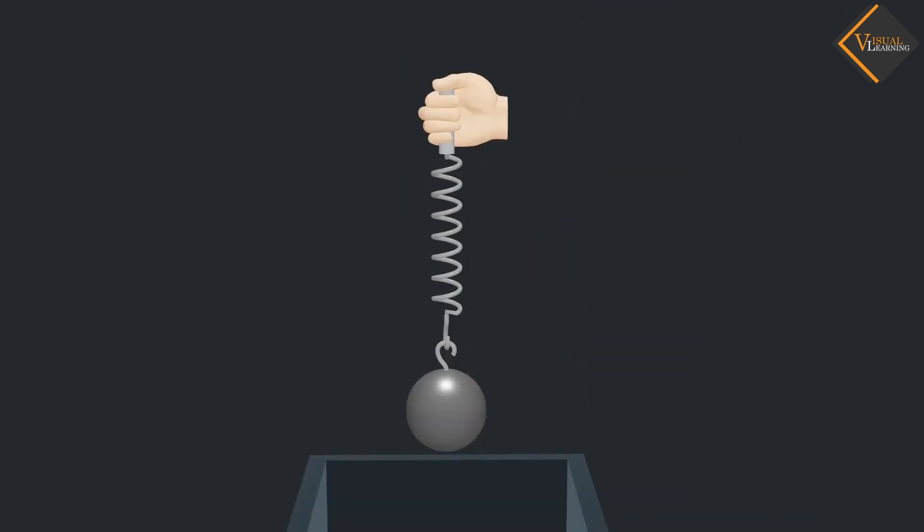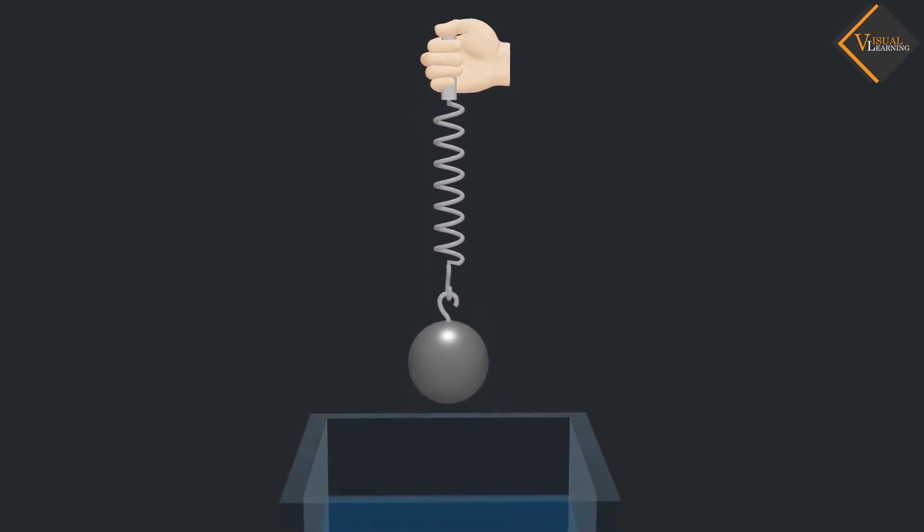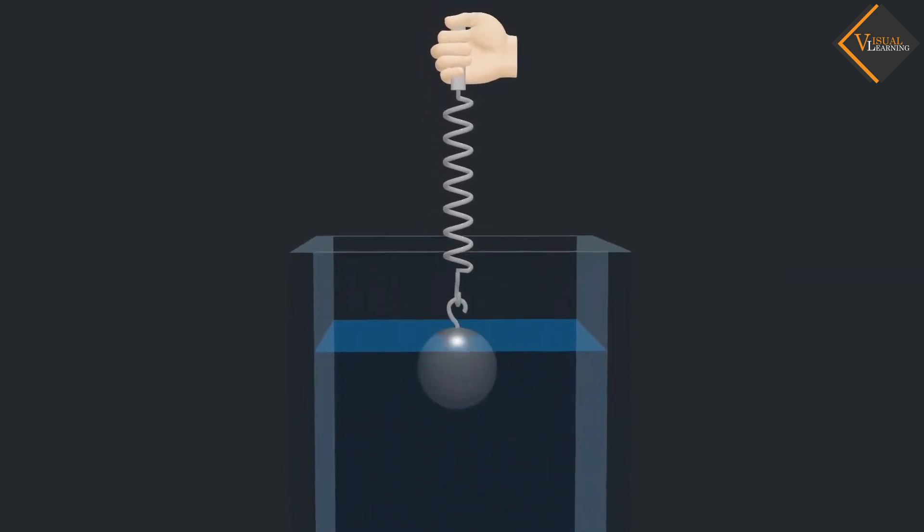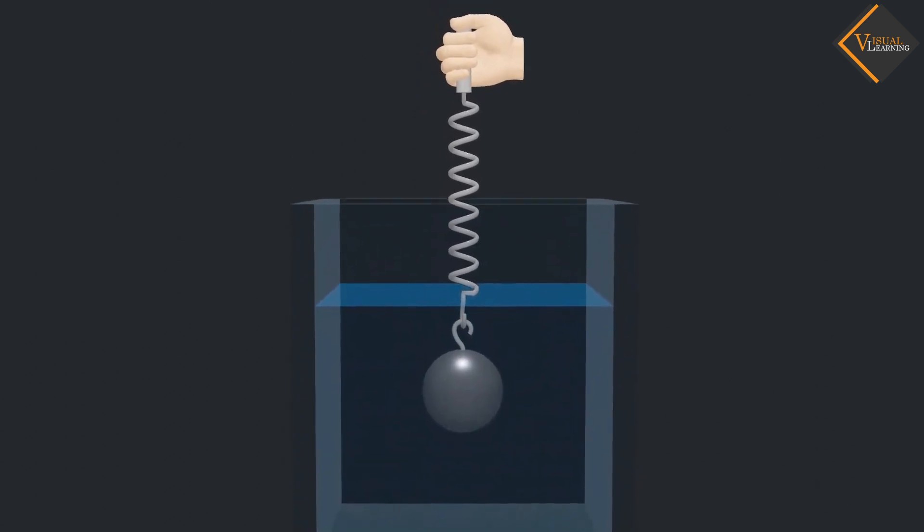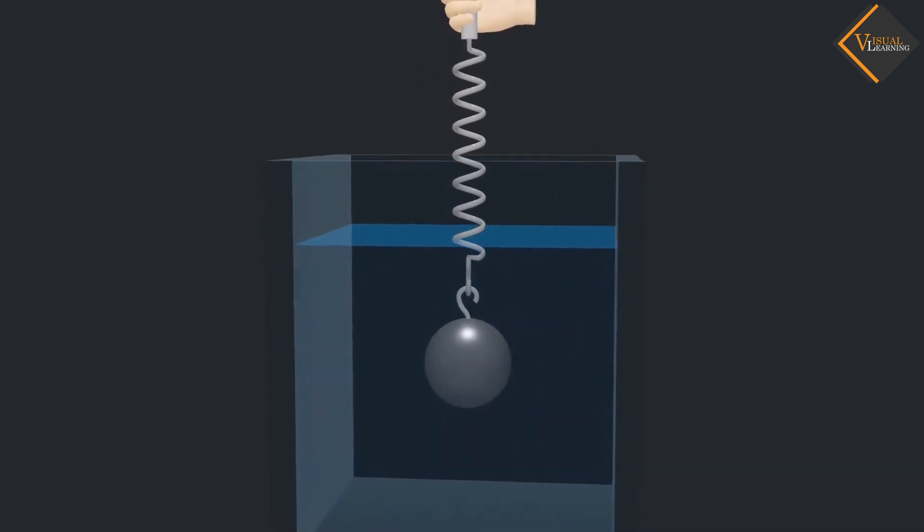Now, along with the spring attached, immerse the iron ball into the water. The iron ball displaces some water.